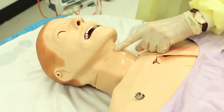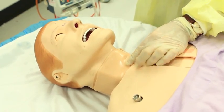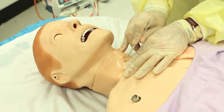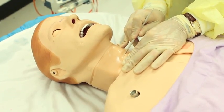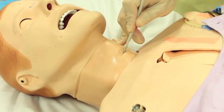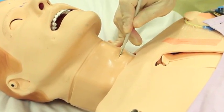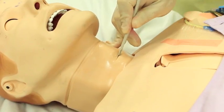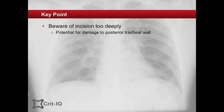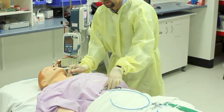Following the usual preparation of the patient, the trachea is stabilised with the non-dominant hand. The scalpel is inserted through the skin into the airway at the lower border of the cricothyroid membrane, and a single horizontal incision is made through all layers in one pass as shown. Care should be taken not to insert the blade too deeply, damaging the posterior wall of the trachea. Do not take the blade out of the airway.